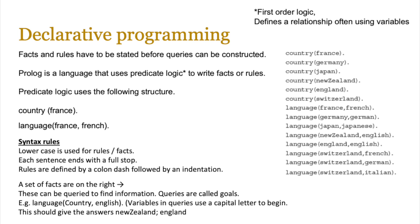Facts can be queried to find information, which are often known as goals. An example of this is: language, Country, English — so we want to find out all the countries where English is spoken. Variables in queries use a capital letter to begin because this distinguishes them from the fact. Looking at the data set on the right, there are countries with different languages — some speak French, English, German, Japanese, and Italian. The query language, Country, English means that English is spoken in New Zealand and England, so those two would be returned. The order is important as New Zealand appears first in the fact list, then England follows.